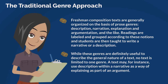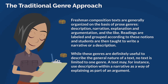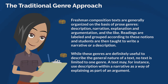The traditional genre approach: freshman composition texts are generally organized on the basis of prose genres — description, narration, explanation, and argumentation, and the like. Readings are labeled and grouped according to these notions, and students are then taught to write a narrative or a description. While these genres are definitely useful to describe the general nature of a text, no text is limited to one genre.